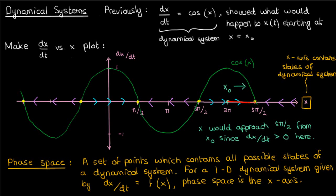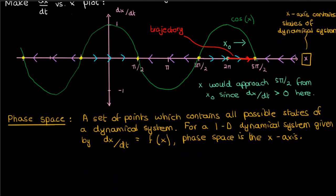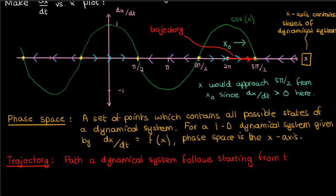Secondly, this path that the point x₀ followed towards the stationary point at 5π/2, this path is called a trajectory. A trajectory is basically a line or a curve which represents the path a dynamical system, given by a differential equation like the one up here, the path the dynamical system follows starting from some initial condition x₀. This path, this trajectory, is contained in the phase space.